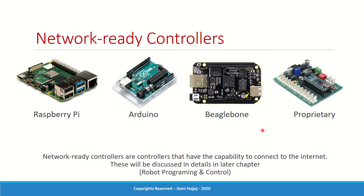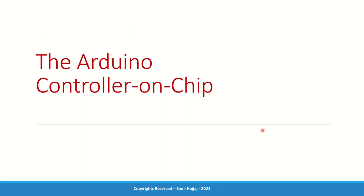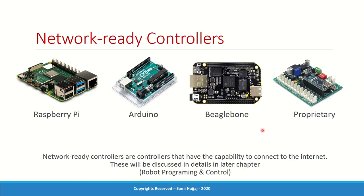Network-ready controllers — Raspberry Pi, Arduino — can be open source or proprietary. The purpose of including network-ready controllers is to link the robot to the cloud. If the controller is connected to the cloud, we can use the framework to broadcast robot information wherever it is needed. We'll talk about Arduino and Raspberry Pi briefly here, as the electronics and programming parts will come in later sessions.